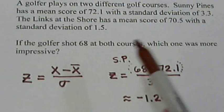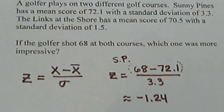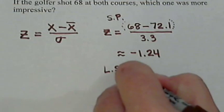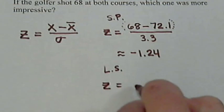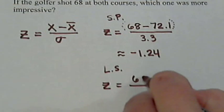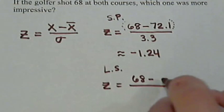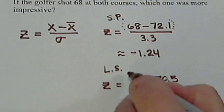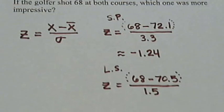Okay, so now let's use the 70.5 and the 1.5 to get the z value for the Links at the Shore. So this time, our z value is going to be, well, his score there was also 68. This time, the mean was 70.5 and the standard deviation was 1.5. And so now, grouping the numerator together, we go to put that into the calculator. This time, we get a z value of negative 1.67.